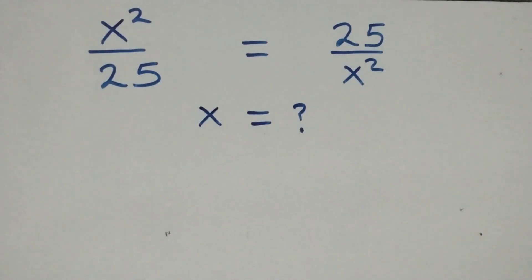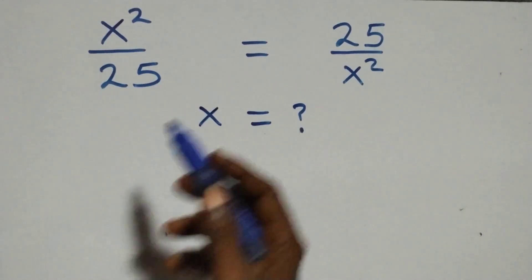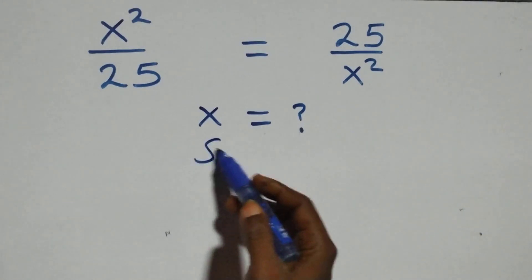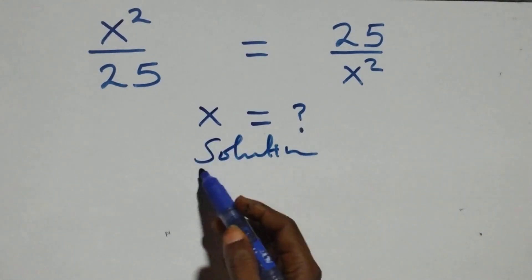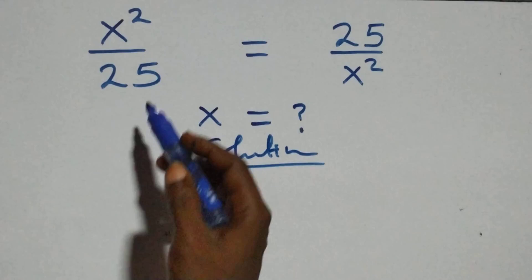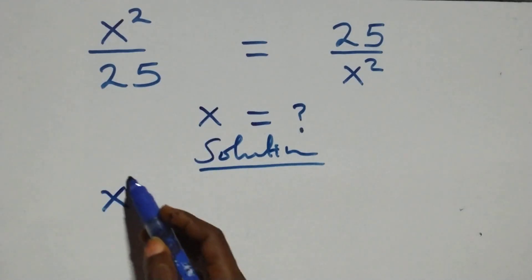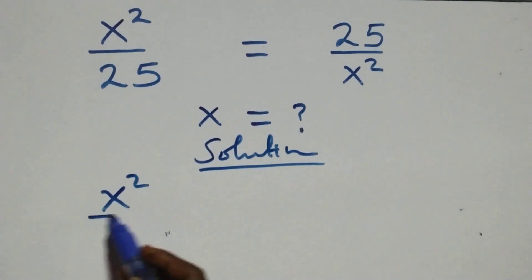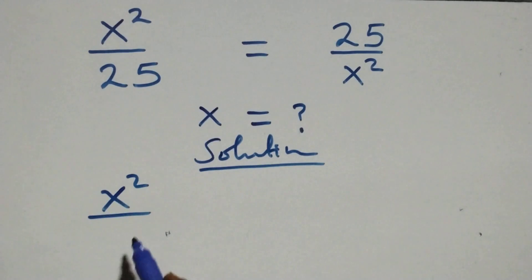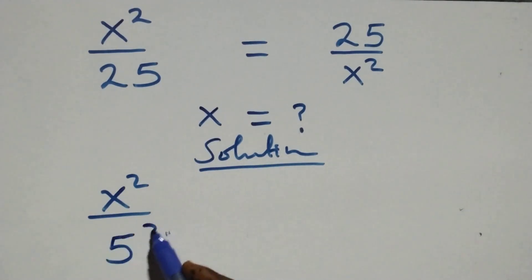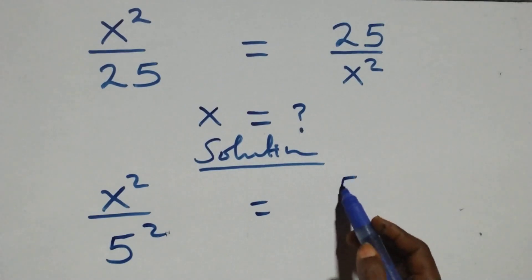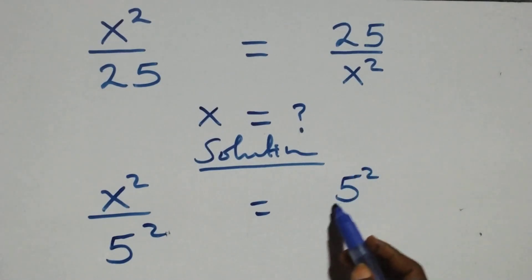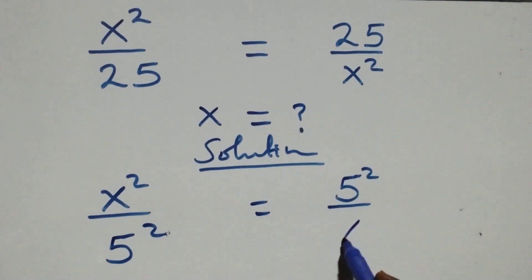Hello, you are welcome. How to solve this nice exponential equation. On what we have here, we can write this as x squared over 25, and write that as 5 times 5, that is 5 squared. Then equals to here also we have 5 squared over x squared.